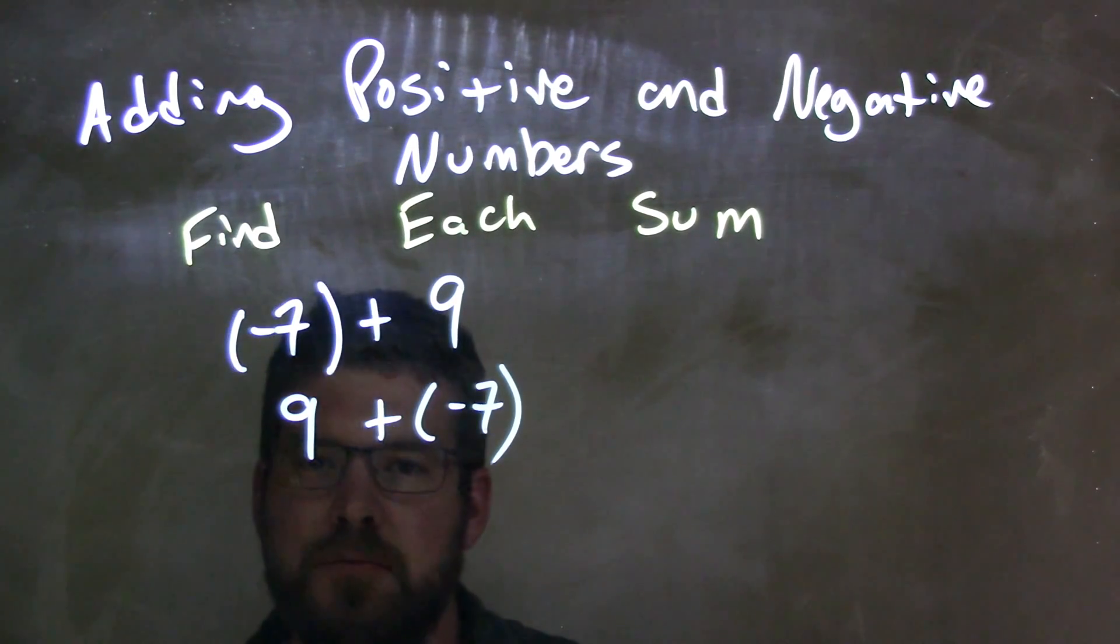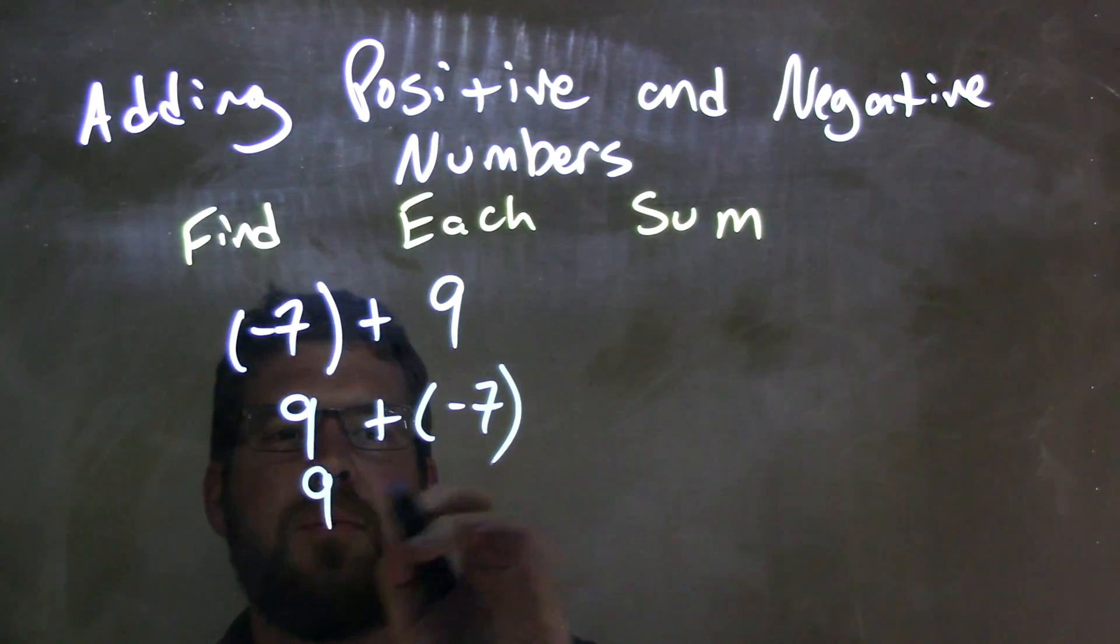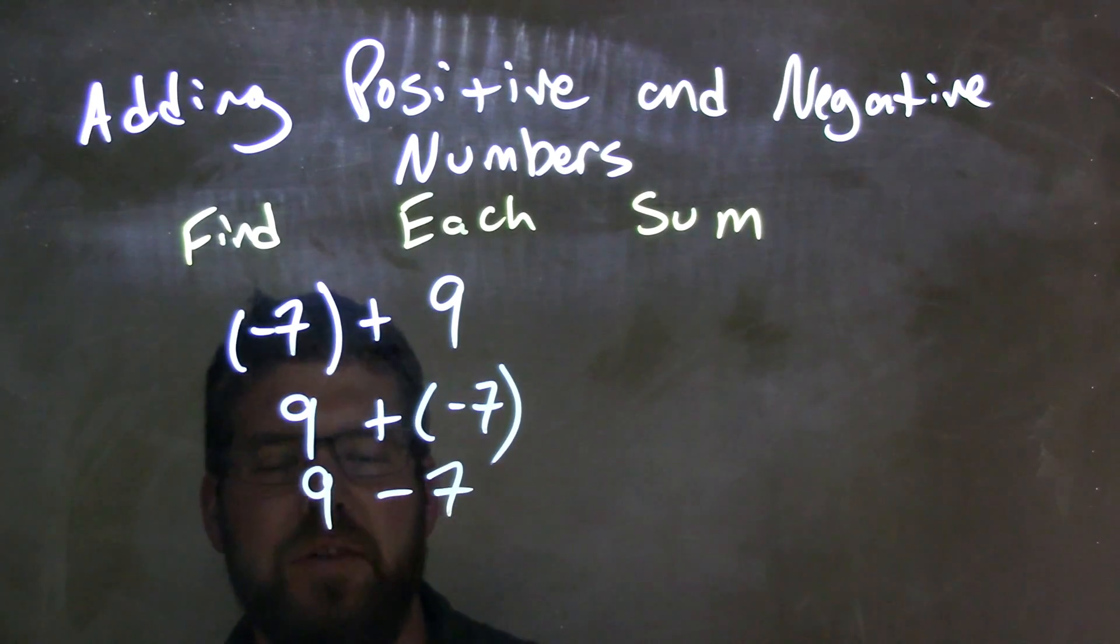Adding a negative is the same thing as subtraction. So 9 plus a negative 7 is 9 minus 7, and 9 minus 7 comes out to just be 2.